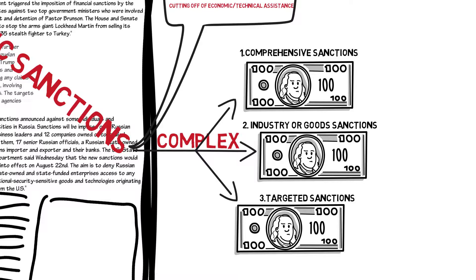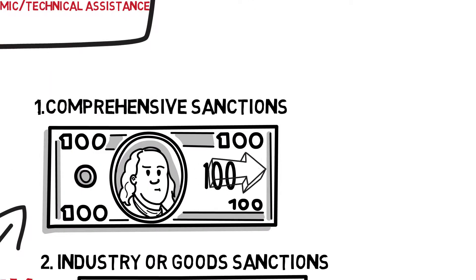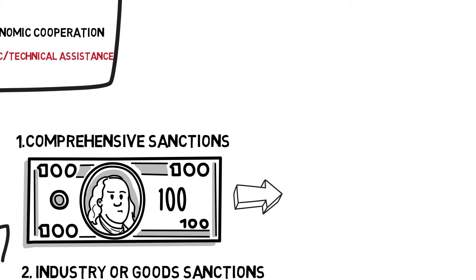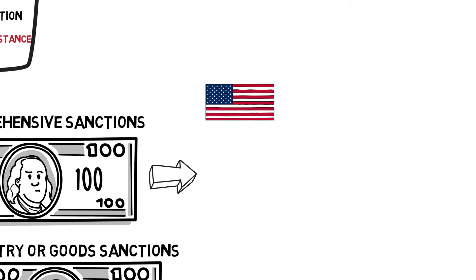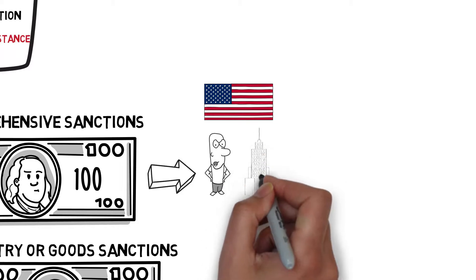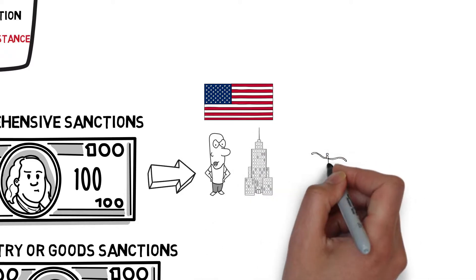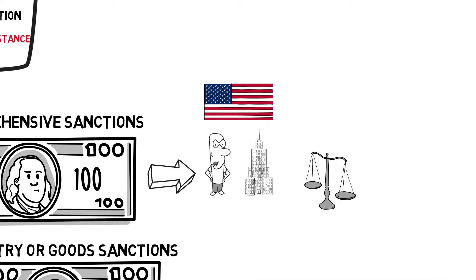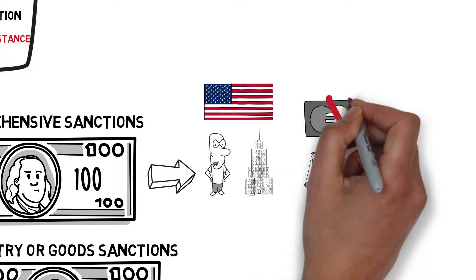One: comprehensive sanctions. Comprehensive sanctions refer to the total trade restrictions imposed by the United States government on specific countries. This means that, without special permission or exemption, individuals and enterprises of the United States are not allowed to carry out any business related to the sanctioned country. The United States, operating mainly through its banking system, also needs to freeze the government assets of the sanctioned countries.